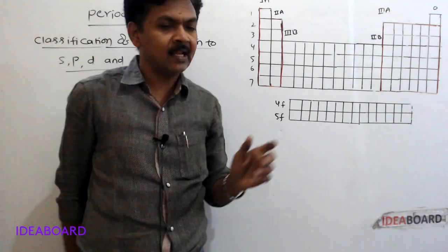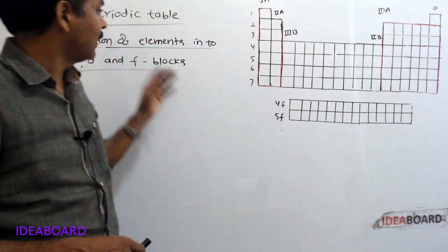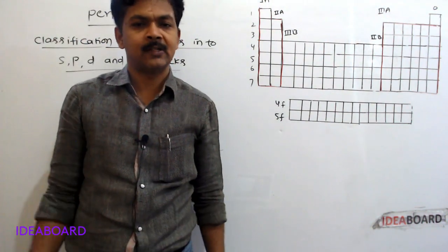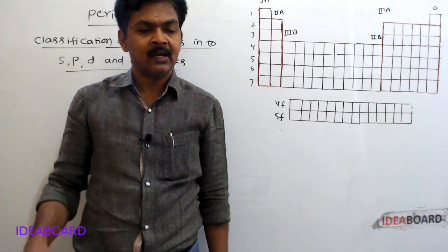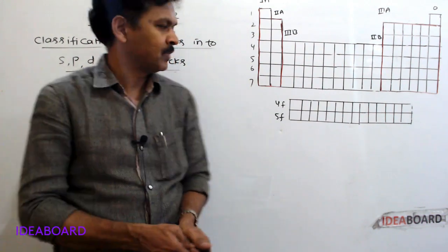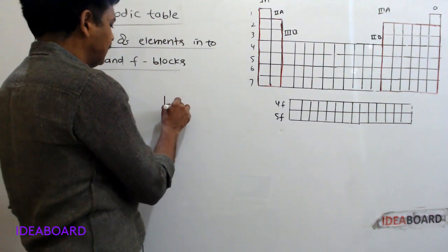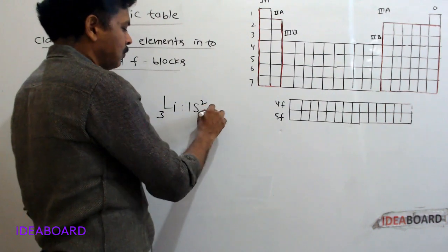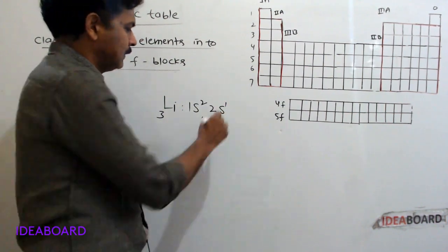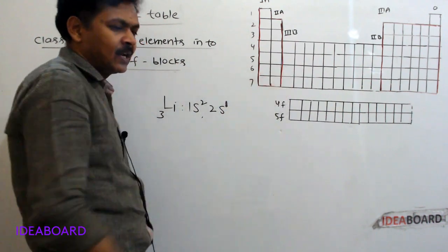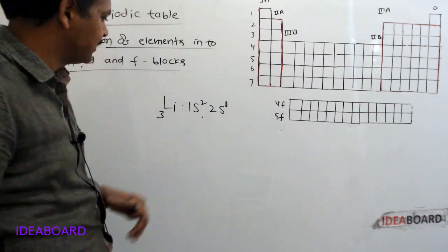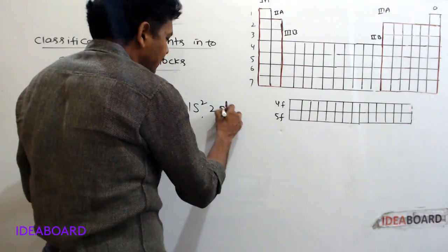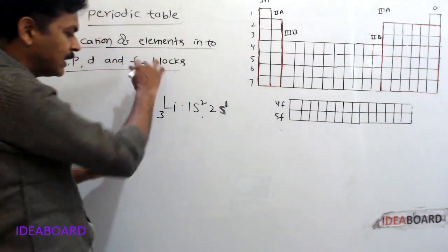On the basis of the differentiating electron, elements are classified into 4 blocks. The differentiating electron is nothing but the last entering electron. If that electron enters into the S subshell or S orbital, that element belongs to the S block.